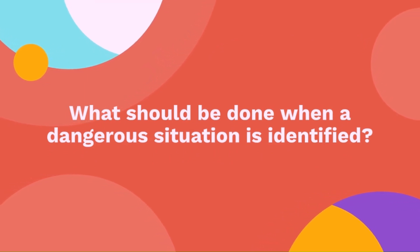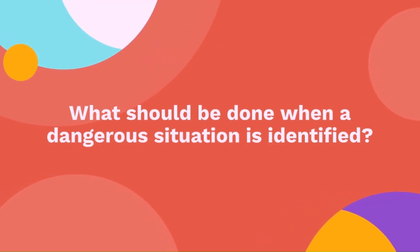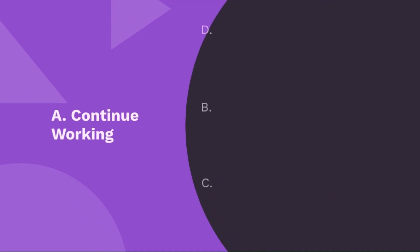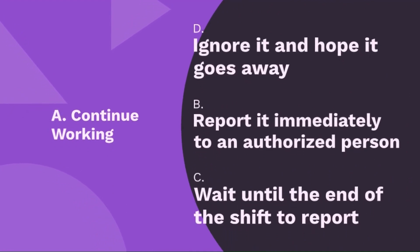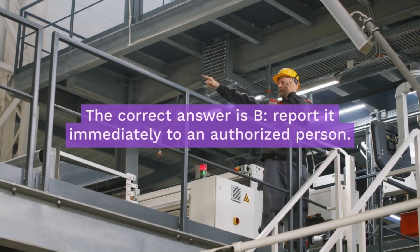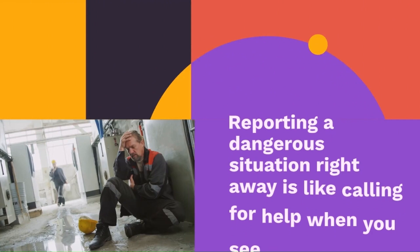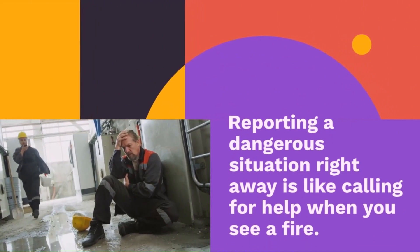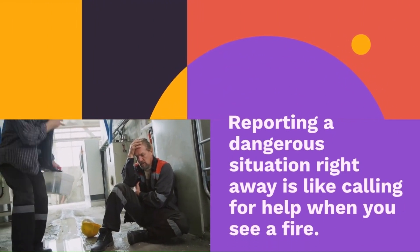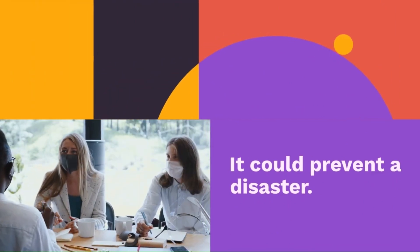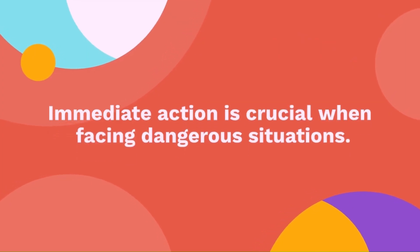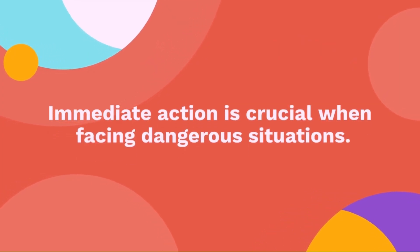Question 21: What should be done when a dangerous situation is identified? The options are: A — continue working, B — report it immediately to an authorized person, C — wait until the end of the shift to report, D — ignore it and hope it goes away. The correct answer is report it immediately to an authorized person. Reporting a dangerous situation right away is like calling for help when you see a fire — it could prevent a disaster. Immediate action is crucial when facing dangerous situations.